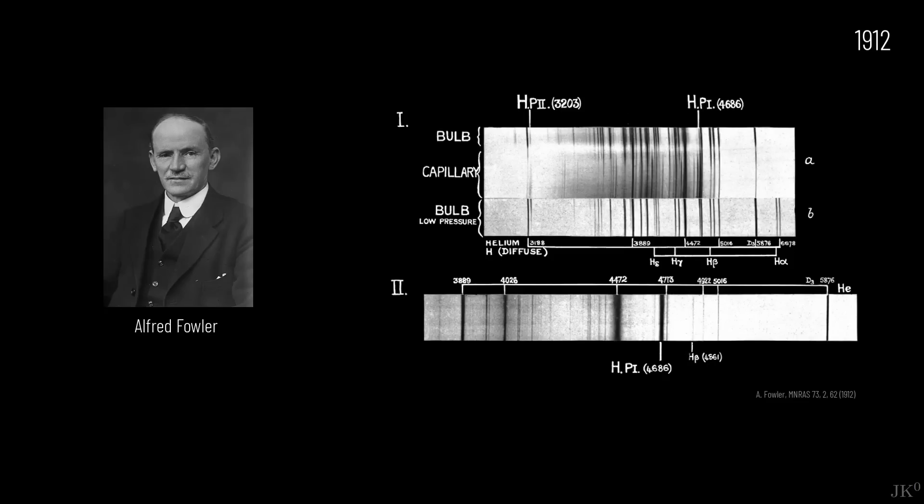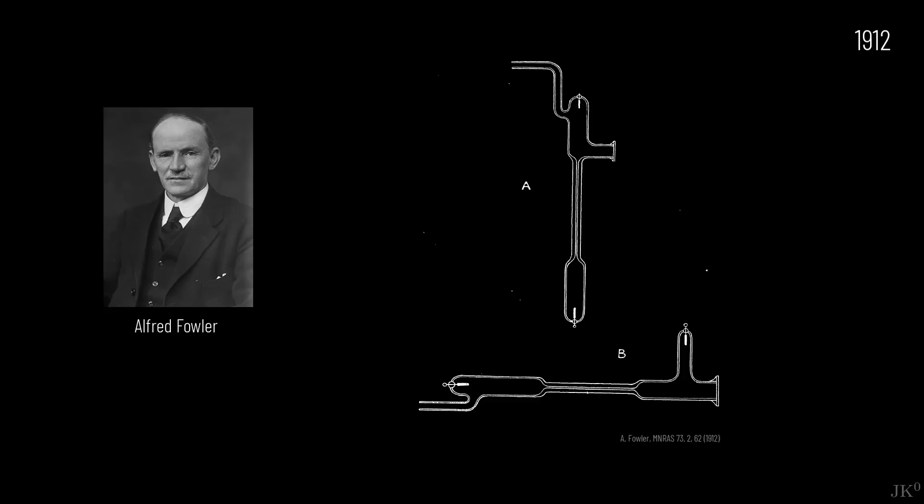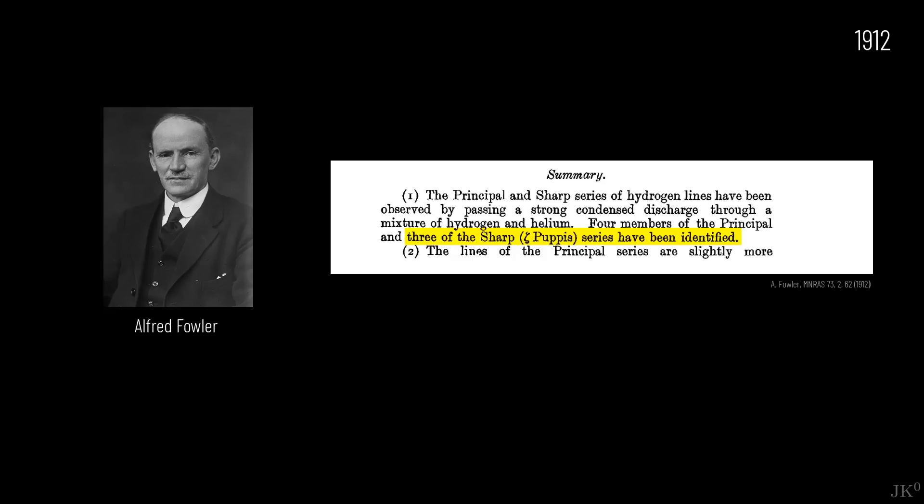One of the most complete studies of the anomalous spectral lines was conducted in 1912 by the British astronomer and spectroscopist Alfred Fowler, during the days when Bohr was still working on the quantum nature of the electron orbits in the hydrogen atom. Sending powerful electric discharges in tubes with mixtures of hydrogen and helium, he was able to reproduce in the lab the peculiar lines from Zeta Puppis discovered by Fleming and reported by Pickering.